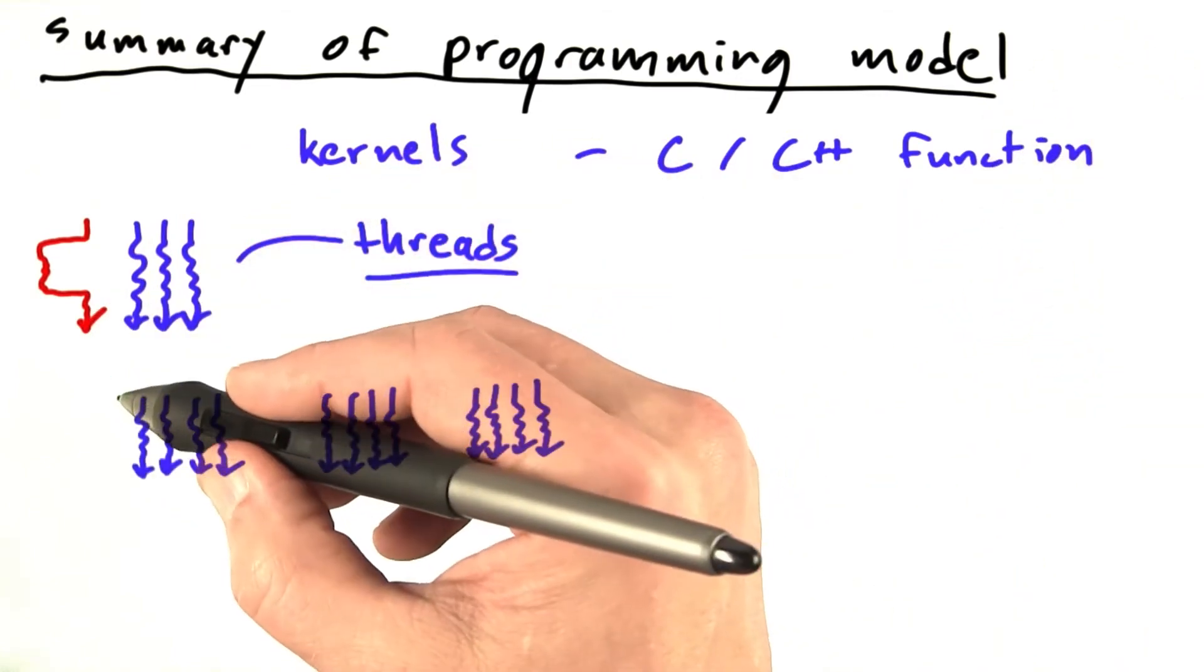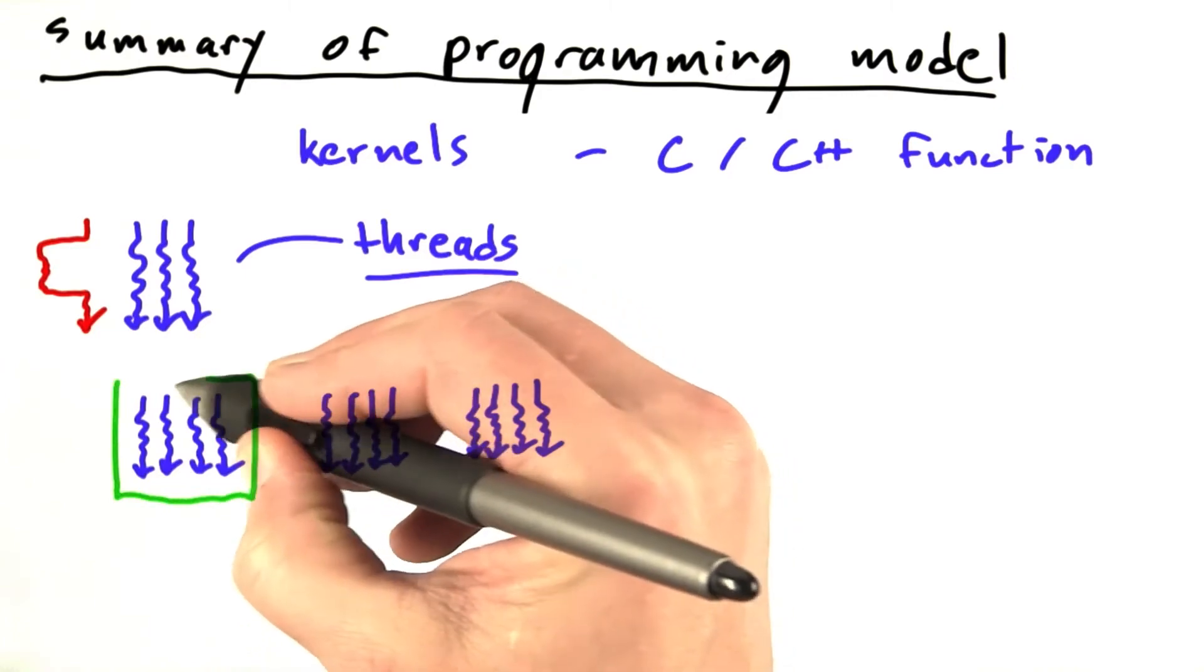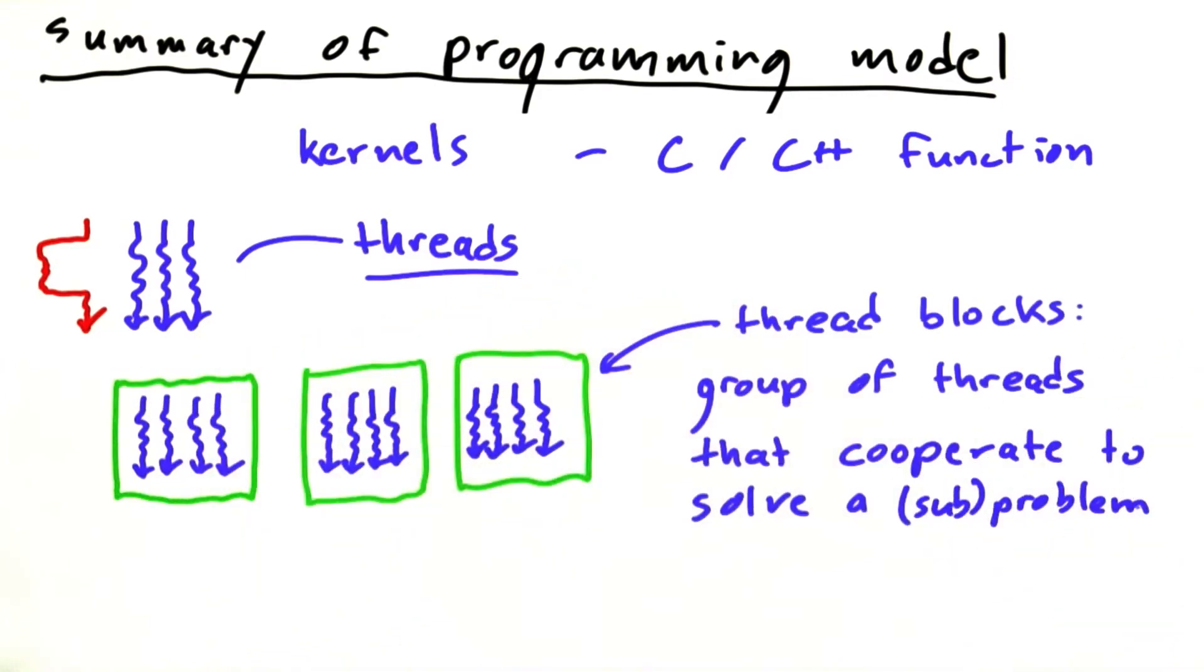So the key thing about threads is that they come in thread blocks. A thread block is a group of threads that cooperate to solve a subproblem.